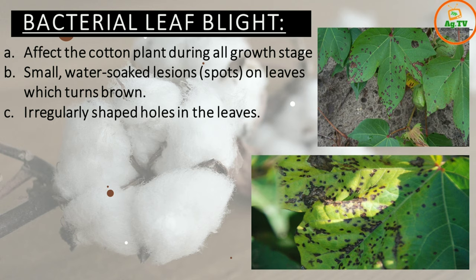Bacterial leaf blight can occur at any stage of the cotton crop. We can see bacterial leaf spots at any stage. The problem is that there are lesions — watery soaked lesions — which are converted to brown color.